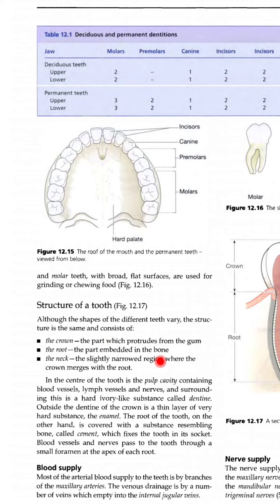The root is the part embedded in the bone — root वाला part वो होता है जो bones के साथ attached होता है। The neck is the slightly narrowed region where the crown merges with the root — वो region जहां से crown, root के साथ मिल जाता है। In the center of the tooth is the pulp cavity containing blood vessels, lymph vessels and nerves, and surrounding this is a hard ivory-like substance called dentine.